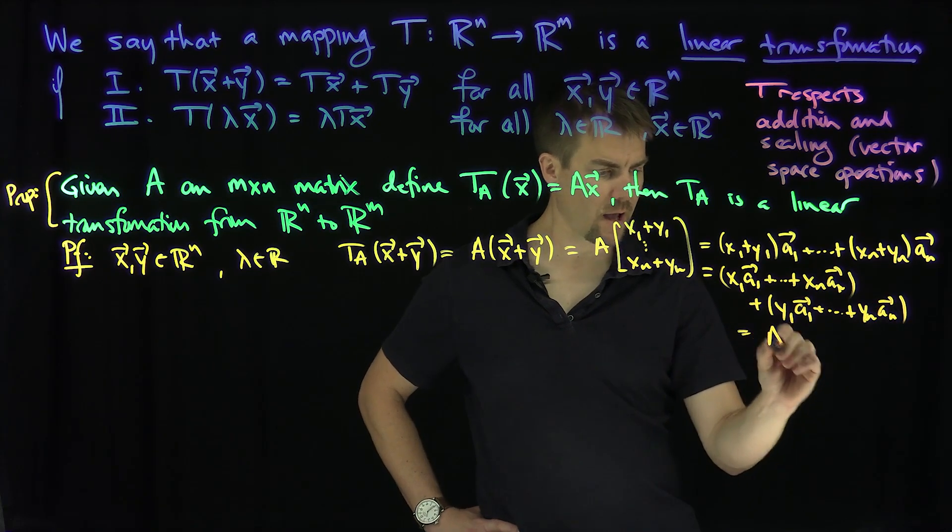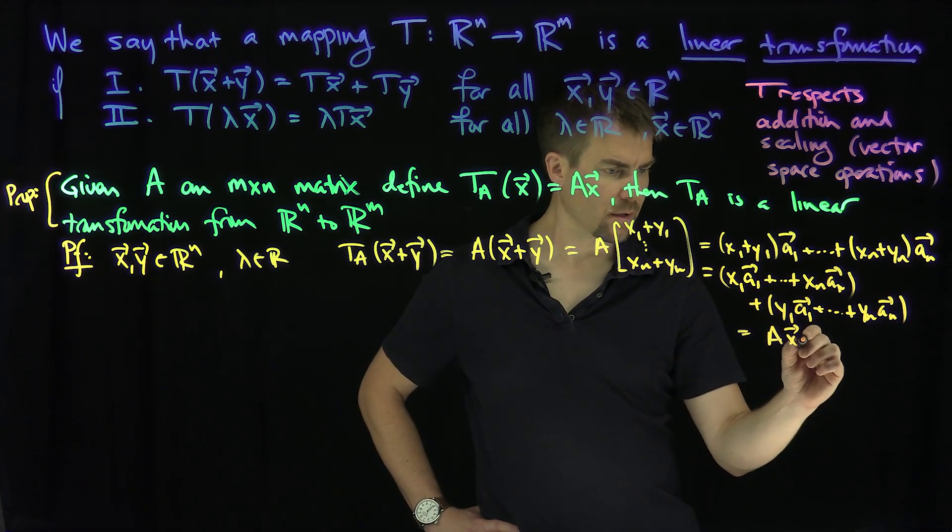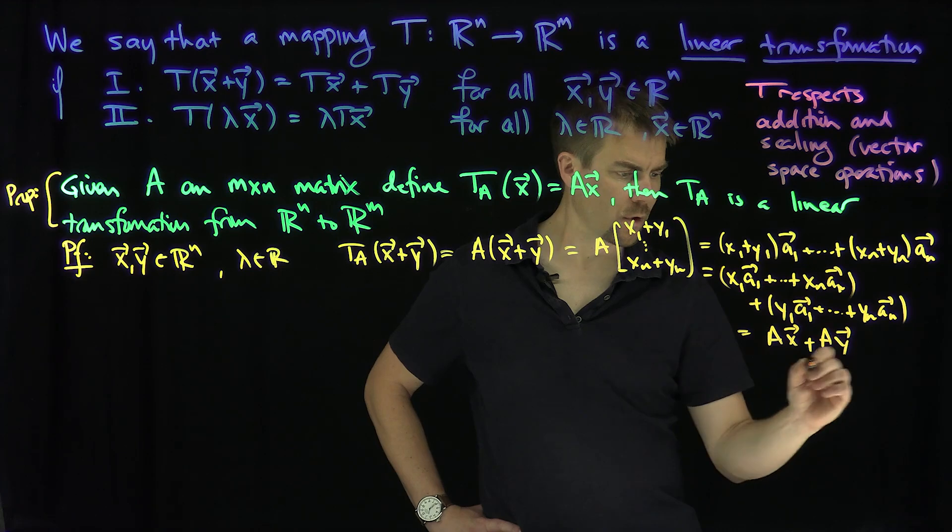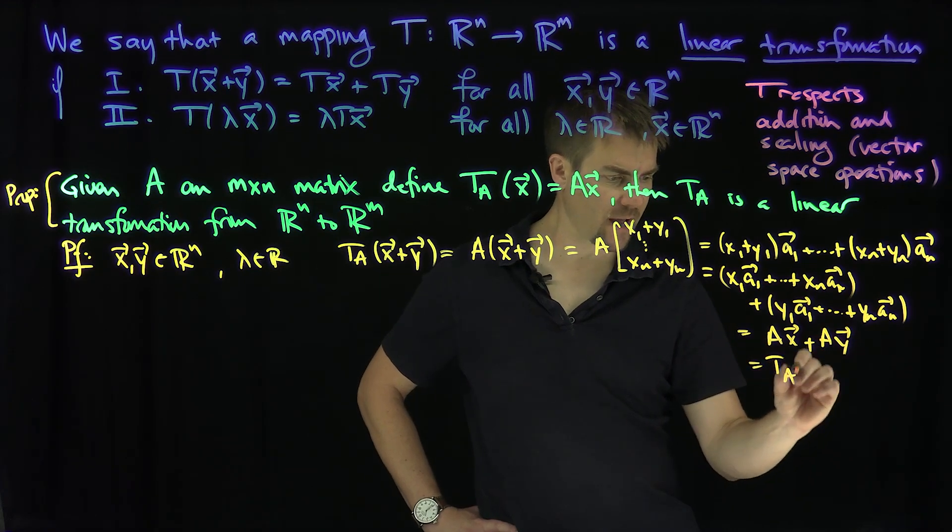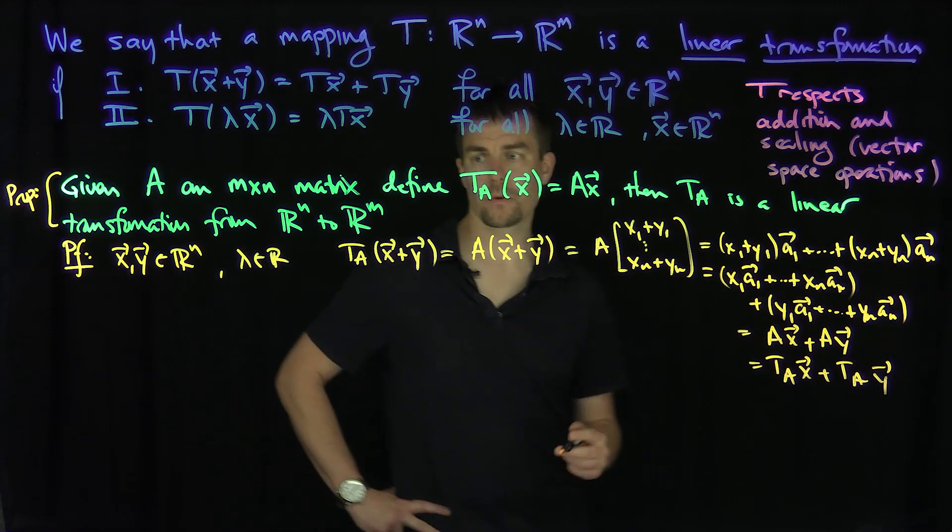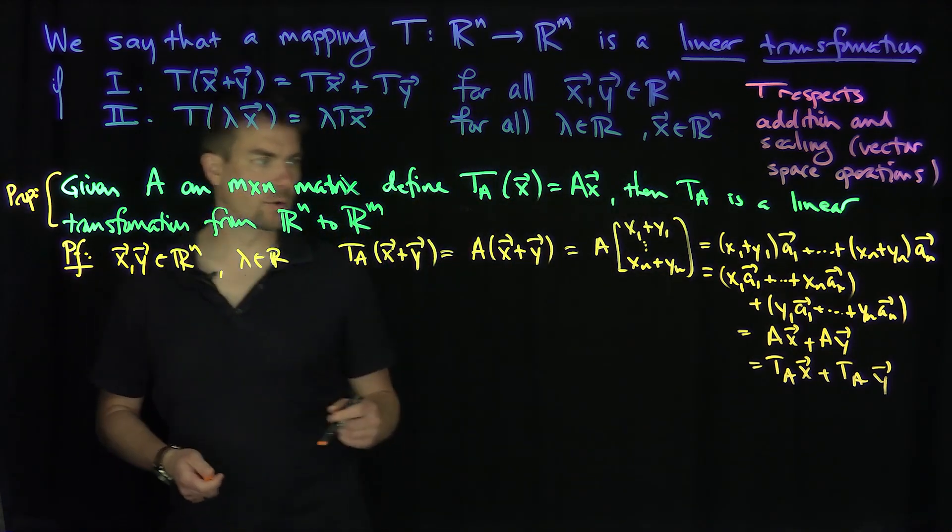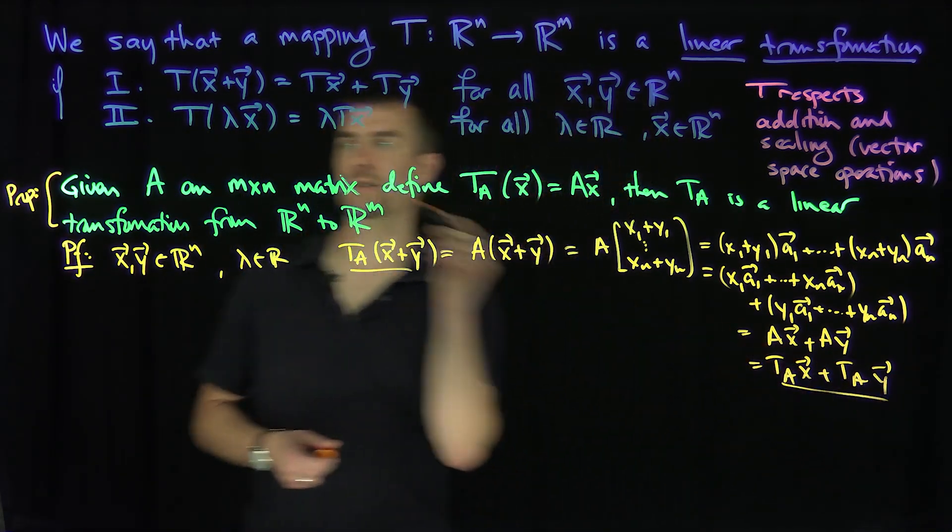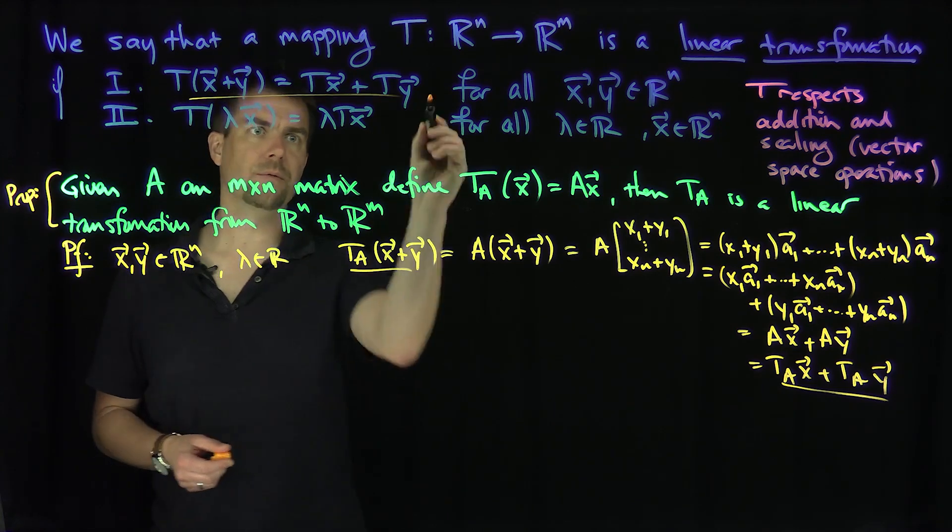Which is equal to A x plus A y, which is T_A x plus T_A y. Great. And now, the same thing is true for, in other words, T satisfies the what? T satisfies this first condition over here. Beautiful.